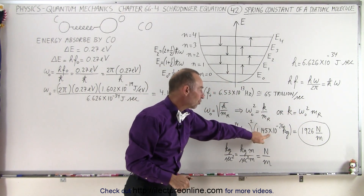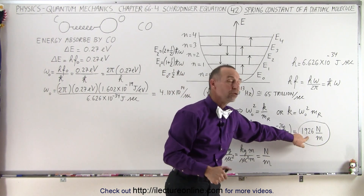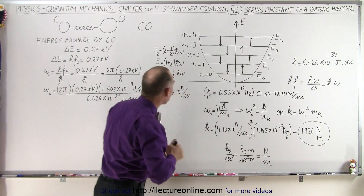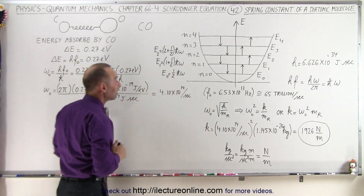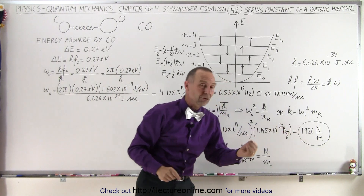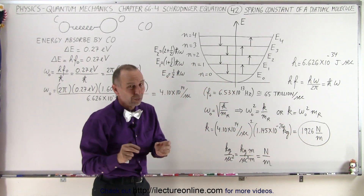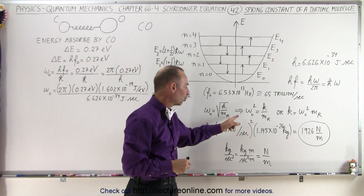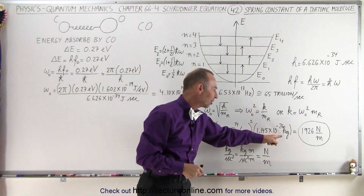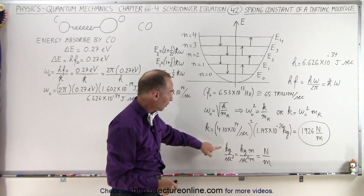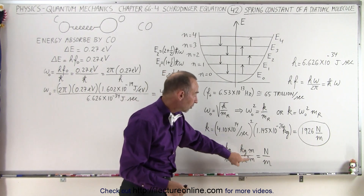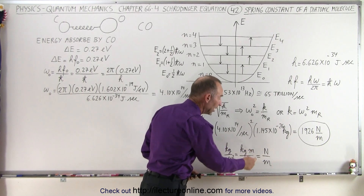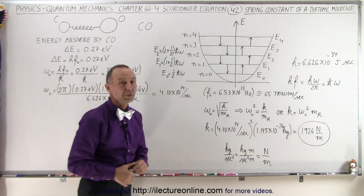Omega squared times the reduced mass gives us 1926 newtons per meter. So the spring constant equivalent of a diatomic molecule like carbon monoxide is 1926 newtons per meter, which is actually fairly close to the actual observed value. If you wonder how 1 over second squared times kilogram becomes newtons per meter: kilogram per second squared, multiplied top and bottom by meters, gives kilogram meters per second squared — which is newtons — over meters. So yes, it is indeed newtons per meter.